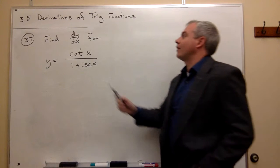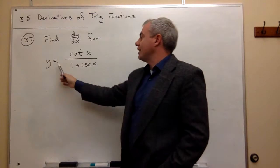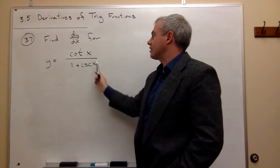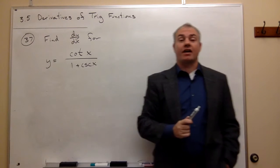In number 37, we'd like to find dy/dx for y equals cotangent of x divided by 1 plus cosecant of x.